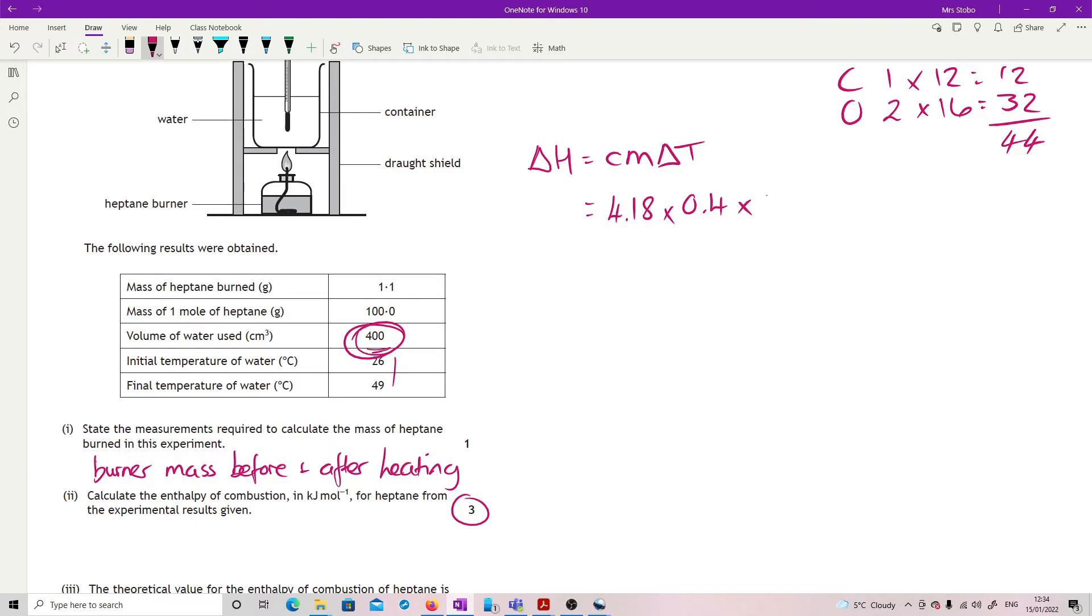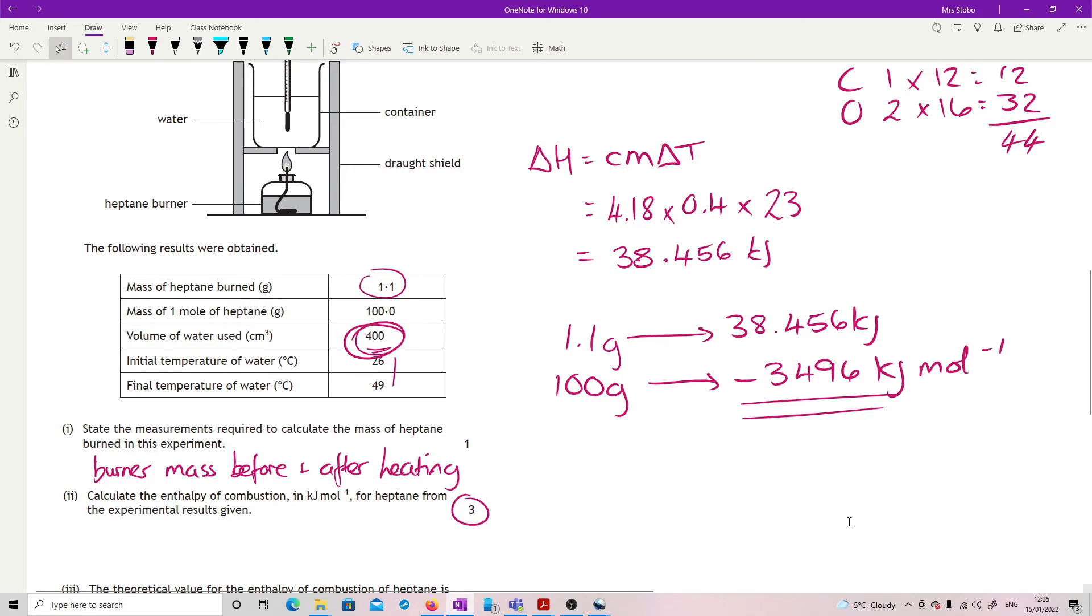So we've got 23 temperature change, which means that I have a delta H at 38.456. Now, this is just kilojoules associated 1.1 grams of heptane. And then just do proportion. So 1.1 grams of heptane gave me 38.456 kilojoules of energy. If I have 100 grams, which is my mass of one mole. So 100 divided by 1.1 times by 38.456 gives me minus 3496 kilojoules per mole. You need that minus because it was released energy because the temperature went up. And that's it. For three marks, that's what you're looking for.